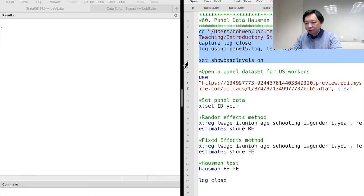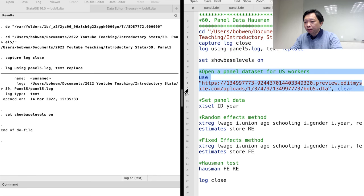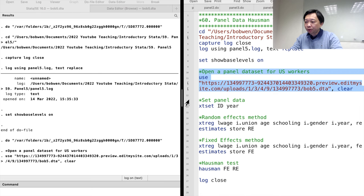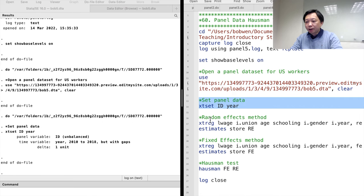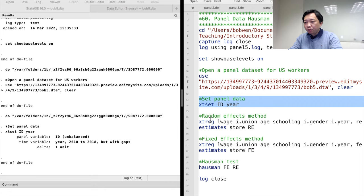The Hausman test helps us choose between random effects and fixed effects models. Under the null hypothesis that the unobserved individual effects are not correlated with the explanatory variables in the model, the random effects and the fixed effects estimators should produce similar results. A rejection in the Hausman test means that the key random effects assumption is false, and then the fixed effects method is more appropriate because only the fixed effect estimator is consistent.